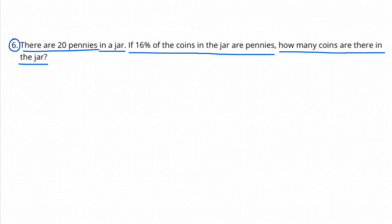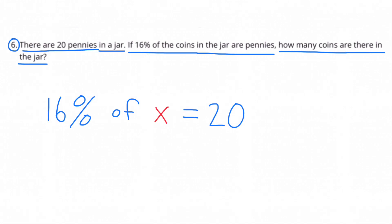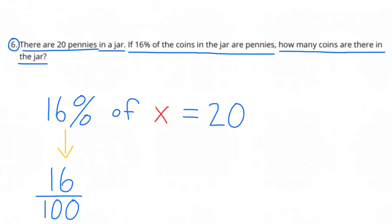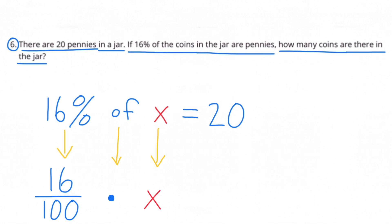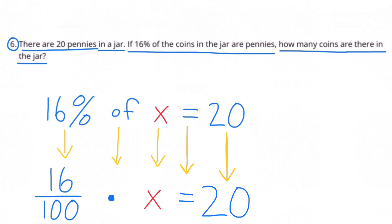Number six: there are twenty pennies in a jar. If sixteen percent of the coins in the jar are pennies, how many coins are there in the jar? The equation I wrote for this is: 16% of x equals 20 — in other words, sixteen percent of an unknown amount of coins equals twenty. Sixteen percent means sixteen out of a hundred, or sixteen hundredths. 'Of' means multiply. Bring down the x to represent the unknown amount, and 20 represents the number of pennies. Press pause if you want to try to solve for x on your own.